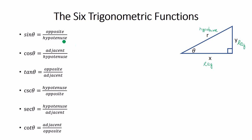What we do with the trigonometric functions — sine, cosine, tangent, cosecant, secant, and cotangent — is apply them to an angle. In this case we call that angle theta. Typically we will use Greek letters to represent angles, so theta is just a generic angle. Sine of theta means you take the opposite leg and put it over the hypotenuse, so that would be Y over R.